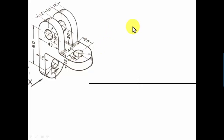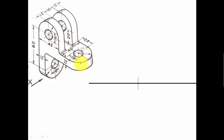Let's find the maximum width and maximum height of this entire object so I can make a bounding box for the front view. From this point to this point the distance is 40. This distance here works out as 20, and since this portion is the radius of the semicircle, this distance is also 20. So 20 plus 20 is 40, and 40 plus 40 overall works out as 80 millimeters — that's the maximum width of the rectangle.